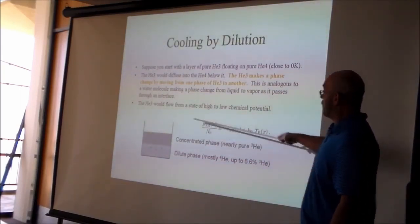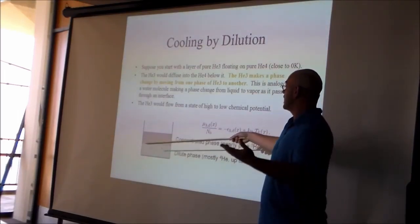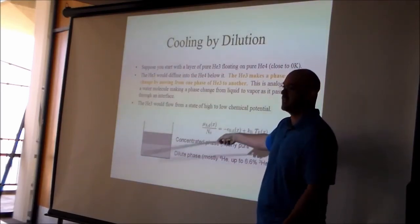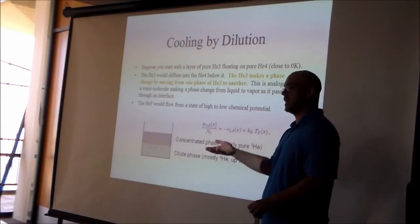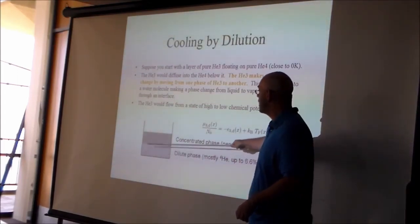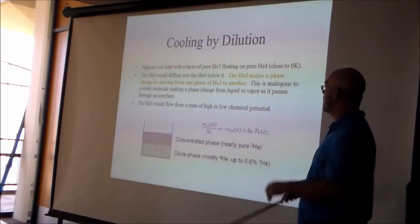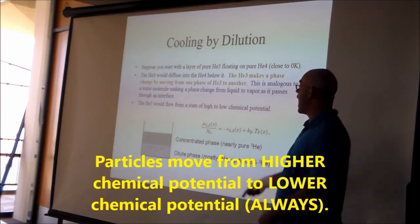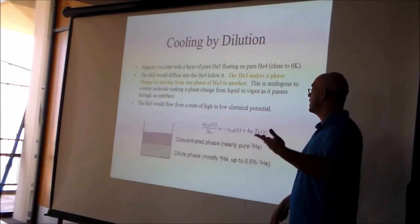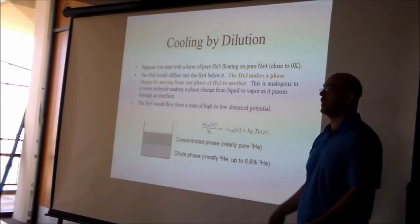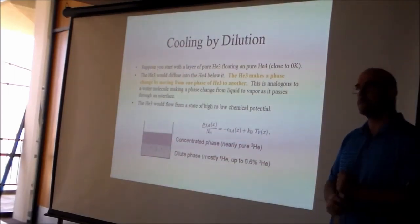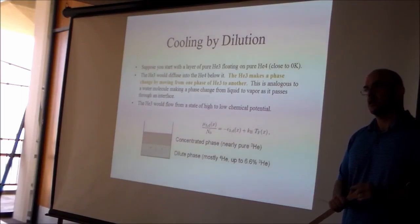The first helium-3 that diffuses into the helium-4 has stronger binding energy. Each subsequent helium-3 must occupy a successively higher energy level, since no two fermions can share the same quantum numbers — so the chemical potential rises. As more helium-3 diffuses in, eventually the chemical potential of both phases becomes equal. At T = 0, this equilibrium concentration is 6.6% helium-3 in the dilute phase.